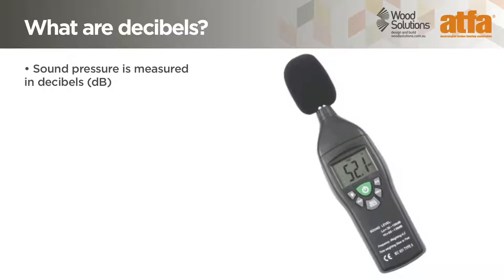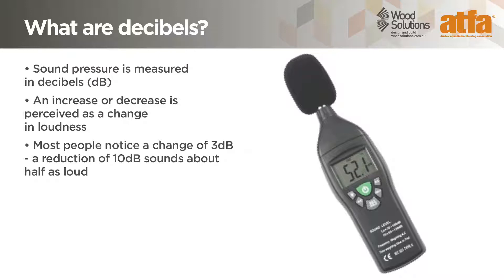Sound is measured in decibels, shown as a lowercase dB. The decibel scale is used to measure different levels of loudness perceived by our ears, and is also used to specify sound requirements. Decibels are a measure of the degree of sound pressure that causes a noise to be loud or soft. Zero dB would be near silence, around 15 dB a whisper, and we normally talk at around 60 dB. A reduction of three decibels would be perceptible to human ears, while a ten decibel variation would be a clear change in loudness.